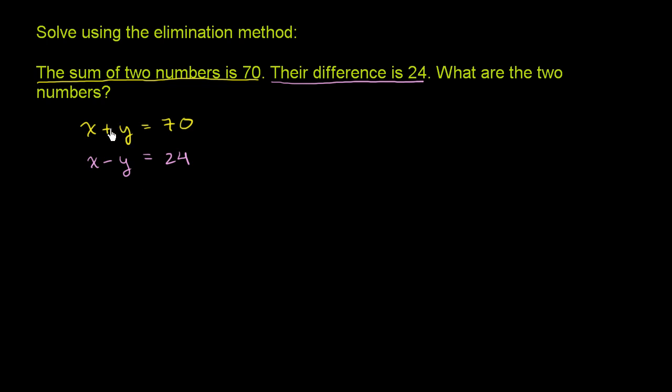So we have a system of two equations with two unknowns, and they want us to solve it using the elimination method. If we add these two equations, on the left-hand side we would have a positive y and a negative y, and they would cancel out. So if we add these two equations, we would be able to eliminate the y's. Let's do that.